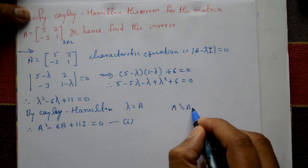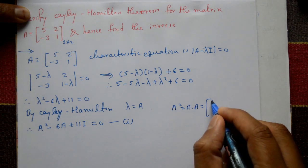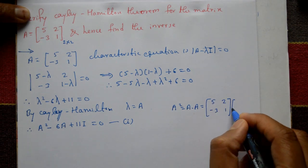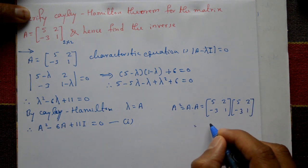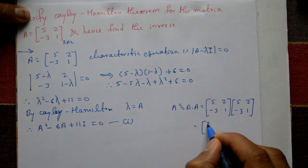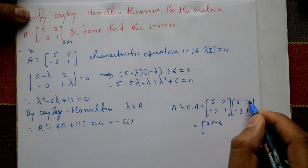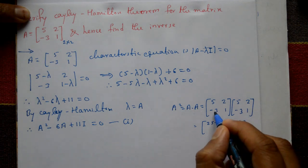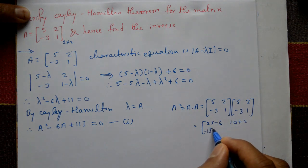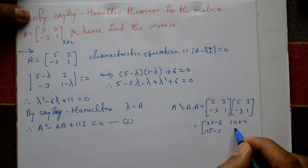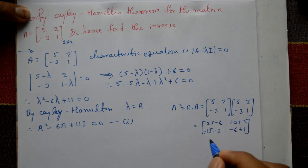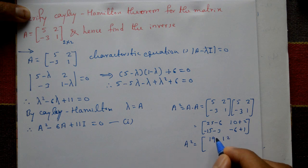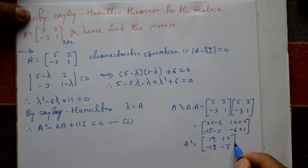A² is A multiplied by A. So: [[5,2],[-3,1]] × [[5,2],[-3,1]]. Computing each element: 5×5 + 2×(-3) = 25 - 6 = 19; 5×2 + 2×1 = 10 + 2 = 12; -3×5 + 1×(-3) = -15 - 3 = -18; -3×2 + 1×1 = -6 + 1 = -5.